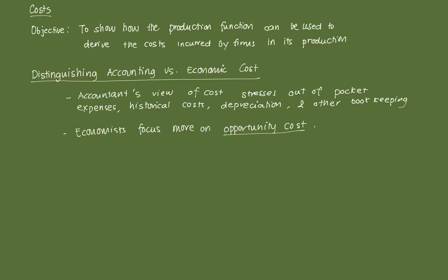From an accountant's view, cost will stress out-of-pocket expenses, historical costs, depreciation, and other bookkeeping entries. That's the typical notion of what we think of as cost. When we produce something, we need to pay for the amount of inputs that we use — say, the amount of flour, the amount of machines, the amount of raw materials. Those need to be paid and have bookkeeping entries, and we can add up their total amount to get some idea of our cost.